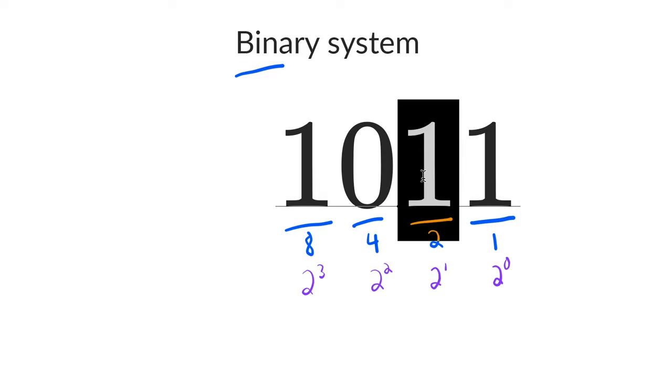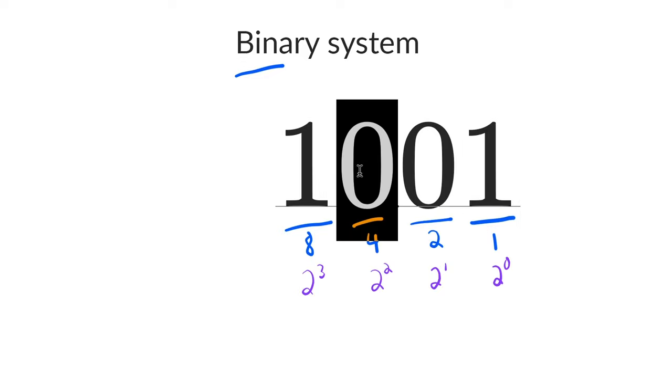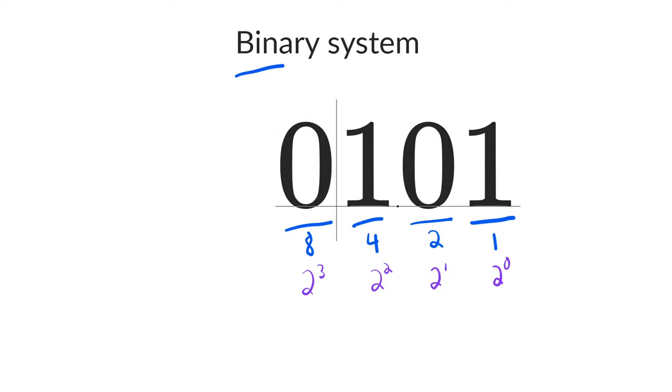0 becomes 1, 1 becomes 0, 0 becomes 1, and 1 becomes 0. What do you think this equals in decimal? I'll give you a second to think about it. Alright, now let's figure it out together.